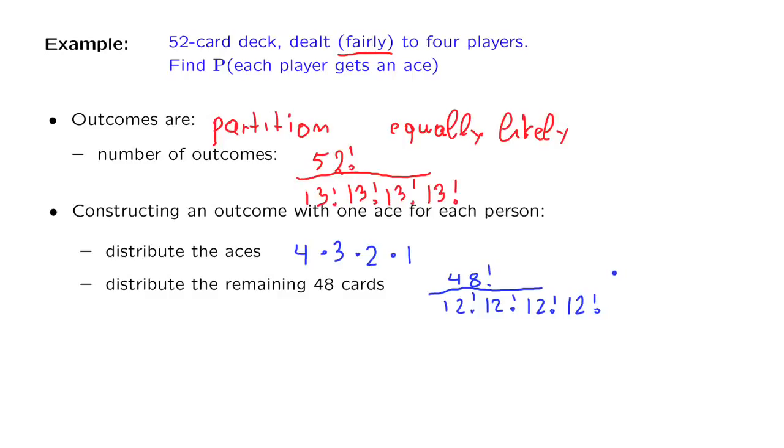So the number of ways that we can distribute the cards so that each person gets an ace, according to the counting principle, is going to be the number of ways that we can distribute the aces times the number of ways that we can distribute the remaining cards. The product of this number gives us the count, gives us the cardinality of the event of interest. We also have the cardinality of the sample space, so the desired probability can be found by dividing these two numbers. And the final answer takes this form.